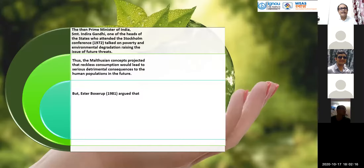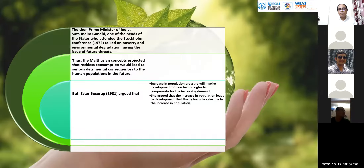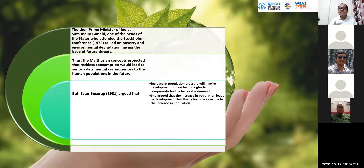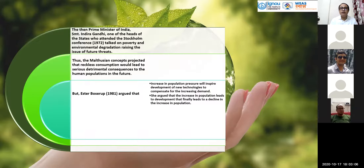Malthus projected that reckless consumption would lead to serious detrimental consequences to human population in the future. But Boserup argued that increase in population pressure would inspire development of new technology to compensate for increasing demand. This was a possible scenario. She argued that increase in population leads to development, which finally leads to a decline in population growth.